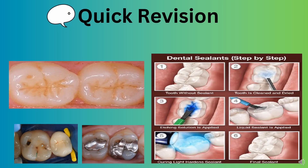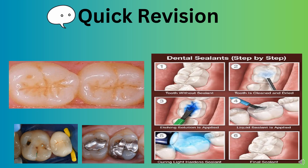Quick revision of what we covered: History — Miller in 1905 was the starting point; Hyatt in 1923 for prophylactic odontomy; Bodector in 1929 for fissure eradication. Morphology — U type, V type, IK type. Based on curing light, four generations: UV at 350 nanometers, visible light at 430–490 nanometers, chemical curing, and fluoride releasing as the fourth generation, which is most commonly used.